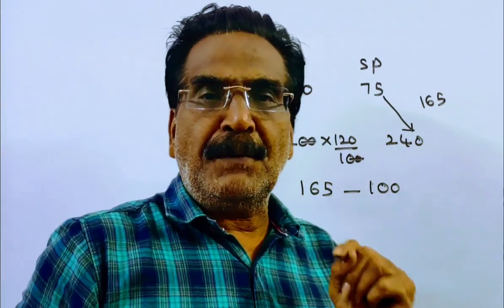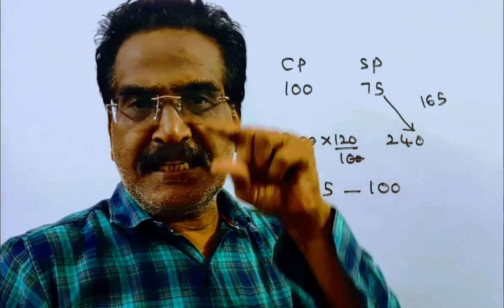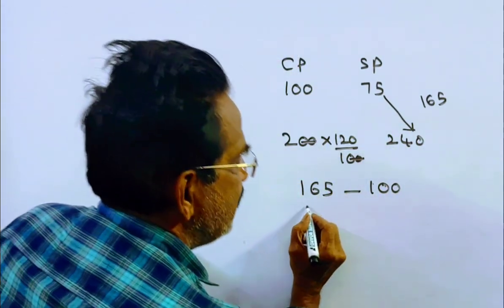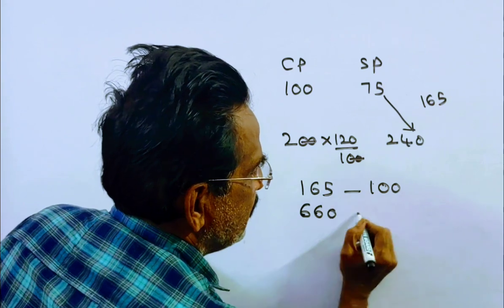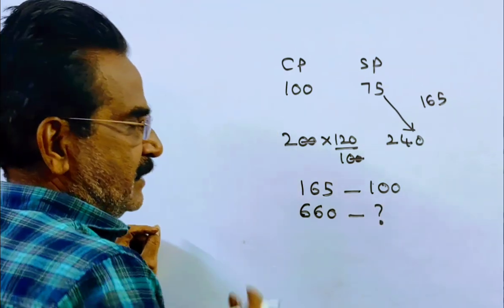So the selling price is increased by 660. If the selling price is increased by 660, what is the cost price?